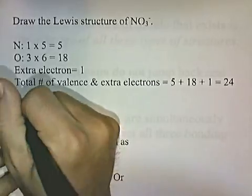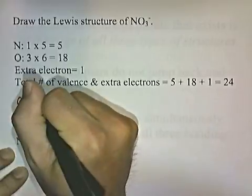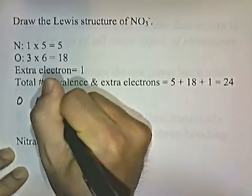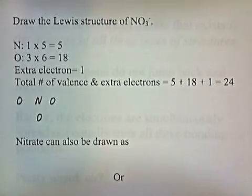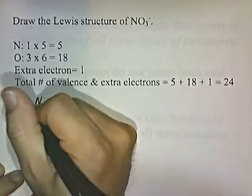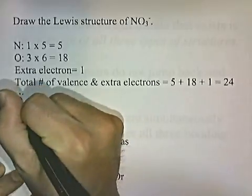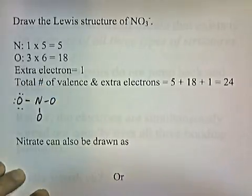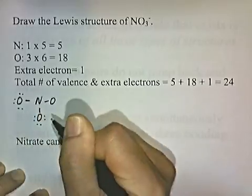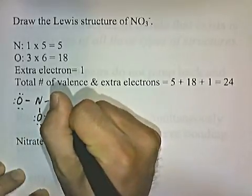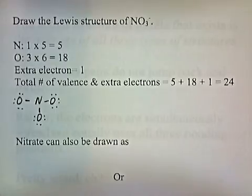Starting with the central atom surrounded by the terminal atoms, we distribute 24 electrons — 2, 4, 6, 8, 10, 12, 14, 16, 18, 20, 22, 24 — distributing all 24 electrons. But we have a problem here.